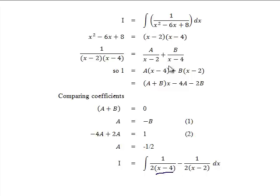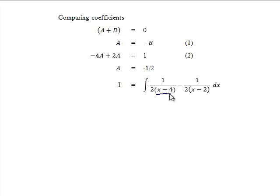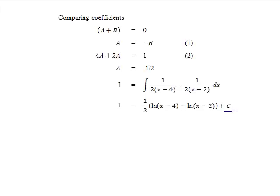We can rewrite the integral as one half over (x minus 4) minus one half over (x minus 2). Integrating gives log of (x minus 4) minus log of (x minus 2), with a half factor outside. That gives us one half times the bracket log(x minus 4) minus log(x minus 2), plus the constant of integration. Using log rules, this equals one half times log of (x minus 4) over (x minus 2), and the half outside is the same as the square root, giving the simplest expression for part B.